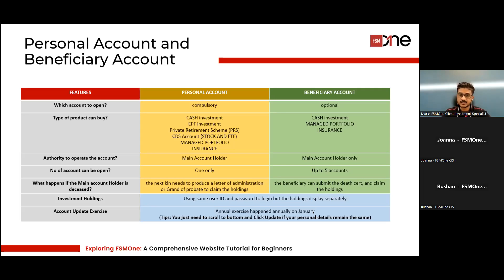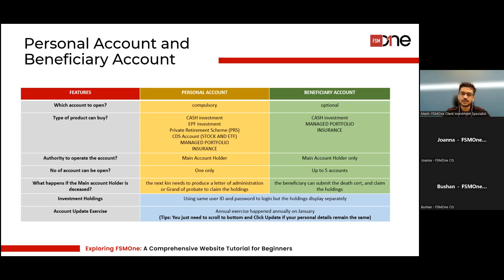If anything happens to the main holder, the beneficiary just needs to submit a certificate to claim the holdings. You only have one login ID, but once logged in you can see all accounts. There is also an annual account update exercise — normally at the start of the year — where the system prompts you to update any changes such as job or personal information. This is an annual practice required by regulators.